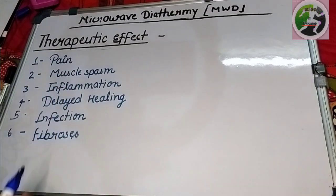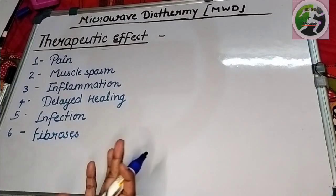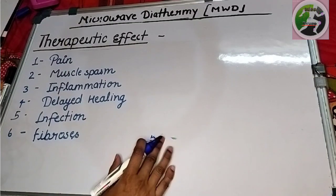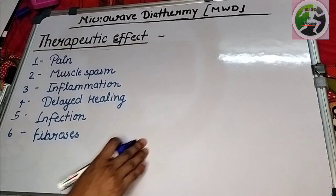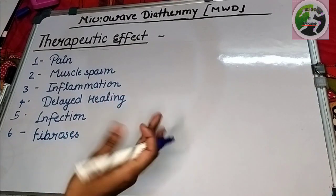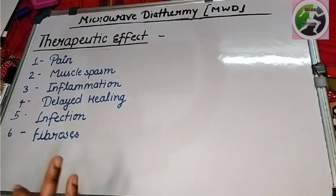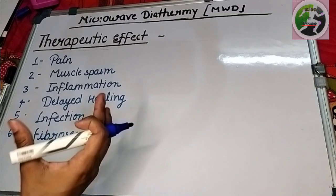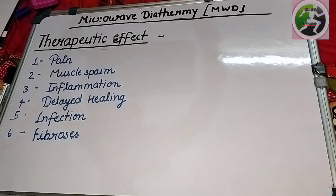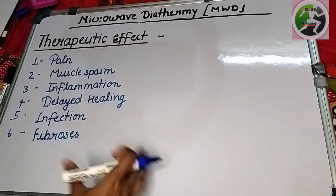The first point is pain. When there is pain in any area, we use the MWD machine. What happens is there is inflammation, and inflammatory cells produce prostaglandins. These molecules accumulate, so when we give heat, they will wash out. The nerve endings come from stimulation, so if you use MWD, the pain stimulus will not go to the brain.